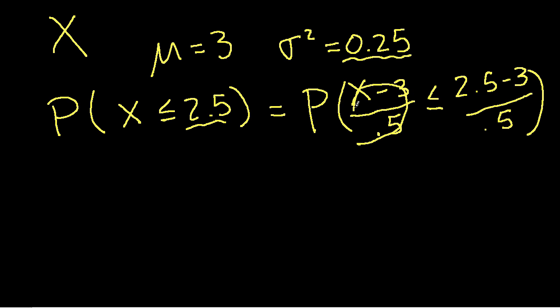Now we know that this part here is Z. So we have the probability that Z is less than or equal to, and 2.5 minus 3, this quantity is negative 0.5 divided by 0.5 gives us minus 1.